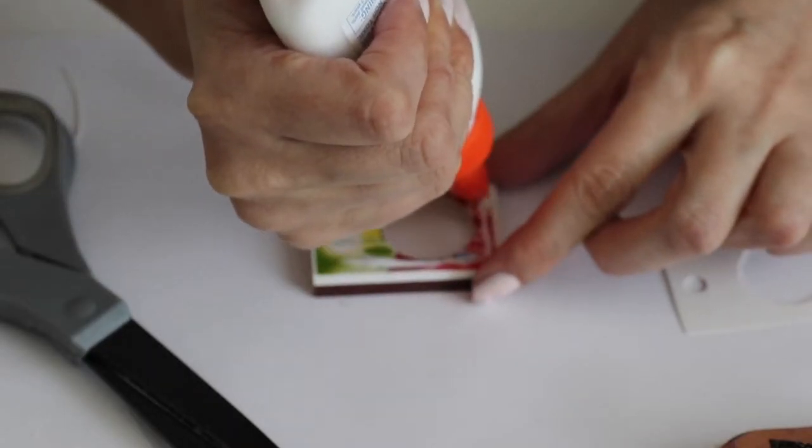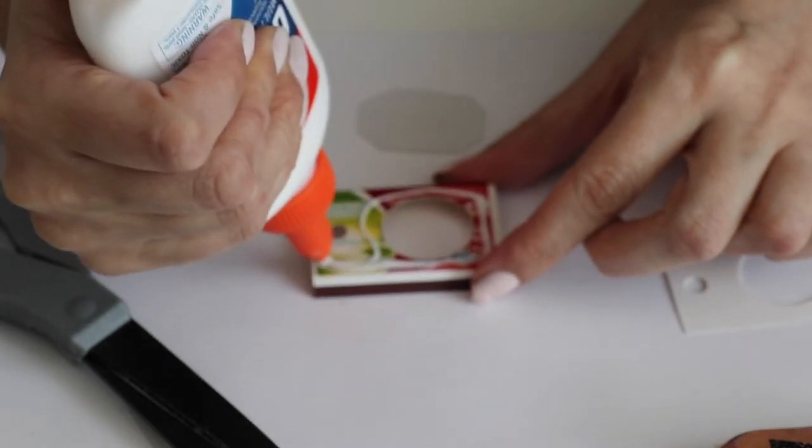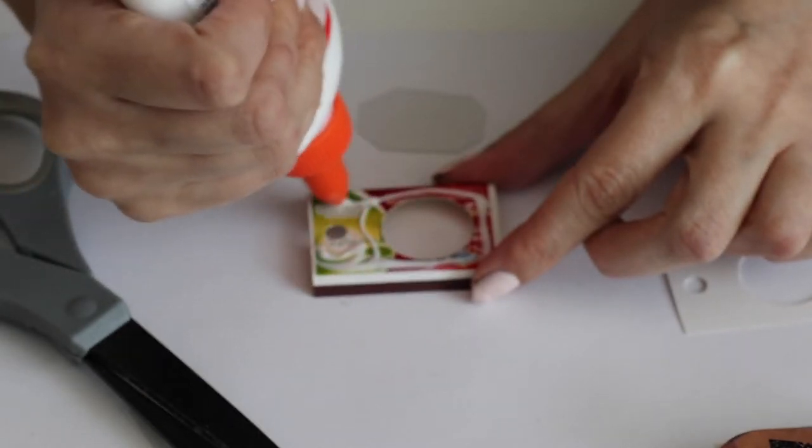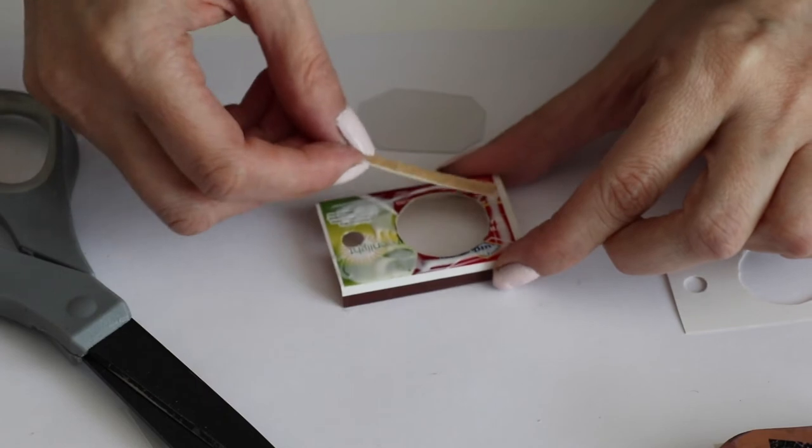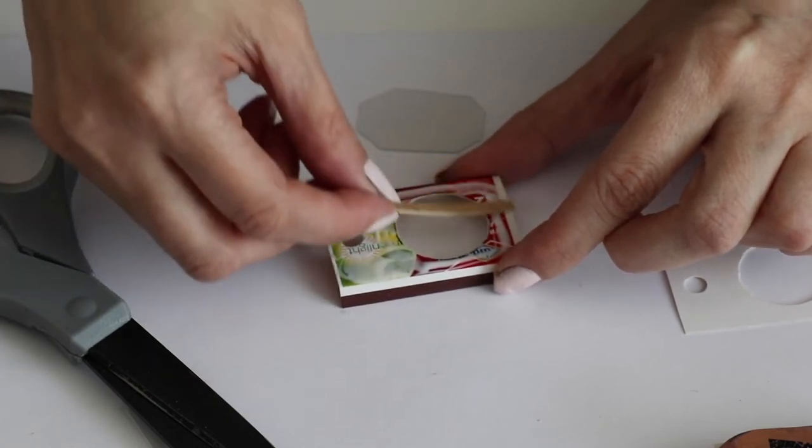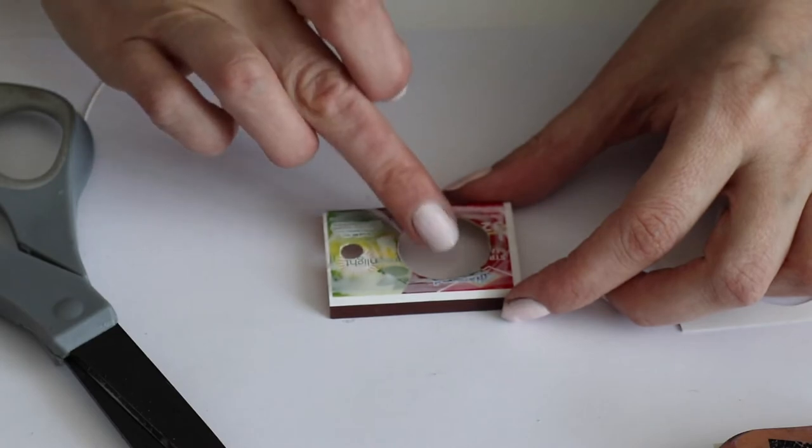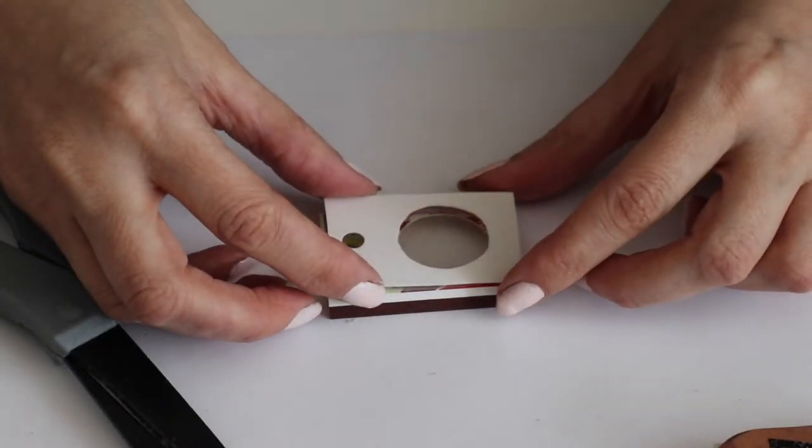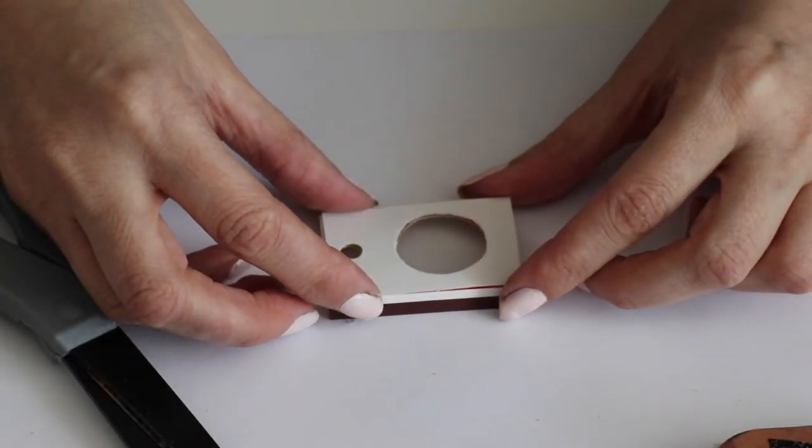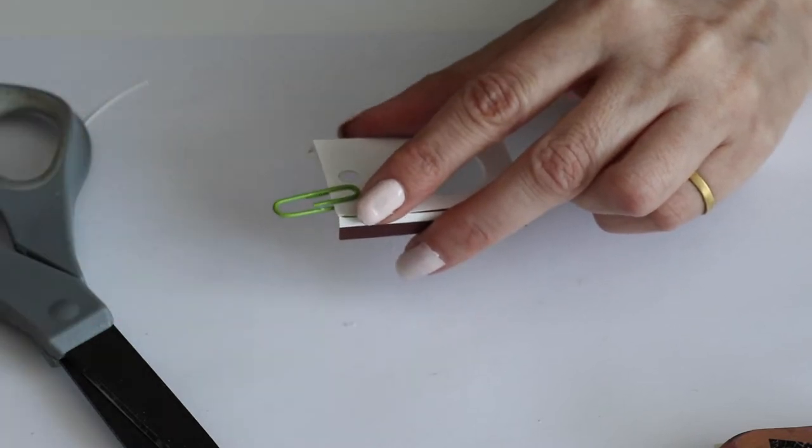Spread white glue thinly but evenly around the whole top of the box. You want to make sure it does not ooze too much. Place the plastic, sandwich the cardstock on top. You can clamp with paper clips.